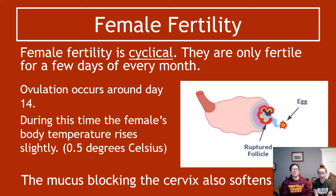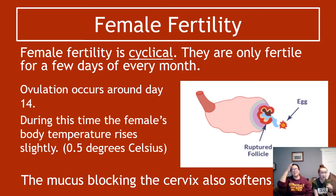During this time a female's body temperature will rise slightly by around 0.5 degrees Celsius — you need to know that, as it can be asked about. Also around the time of ovulation, the mucus blocking the cervix softens, which means there is a much higher chance of sperm being able to get in and travel along to potentially meet and fertilize the ovum.